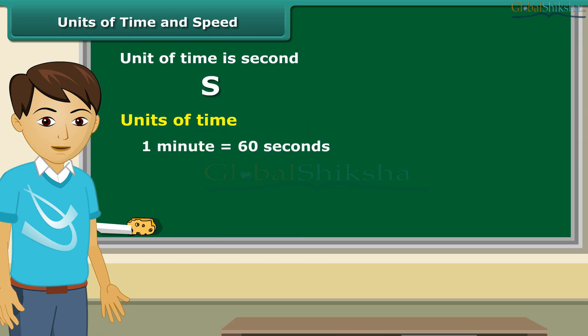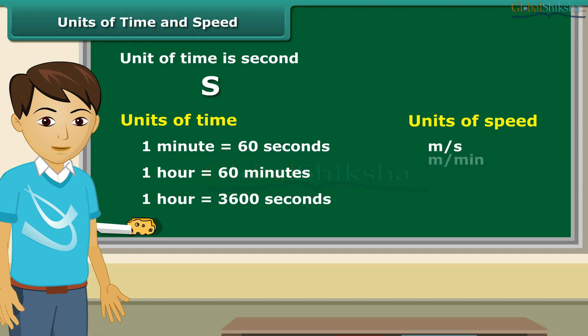One minute is equal to 60 seconds and 60 minutes are equal to one hour. The basic unit of speed is meter per second. We can also express it in other units such as meter per minute and kilometer per hour. We write the symbols of all units in singular.